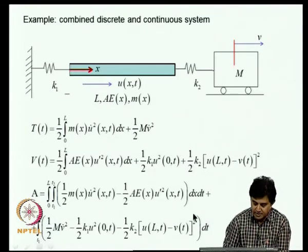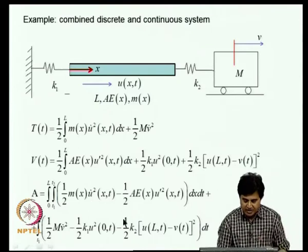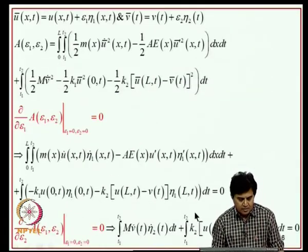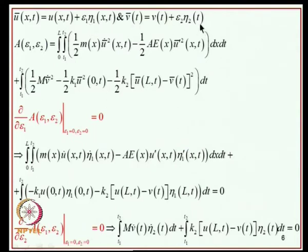The action integral is obtained in terms of the energy stored in the various elements. We assume U and V are the unknown optimal solutions, and U-bar and V-bar are the class of admissible solutions obtained by adding variations eta_1 and eta_2 respectively. The action integral is parameterized in terms of two parameters epsilon_1 and epsilon_2.